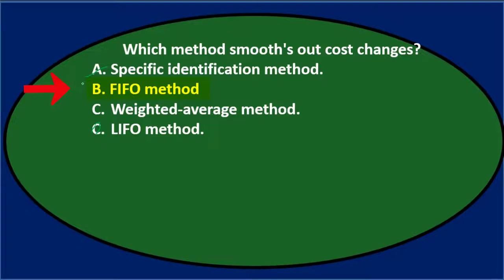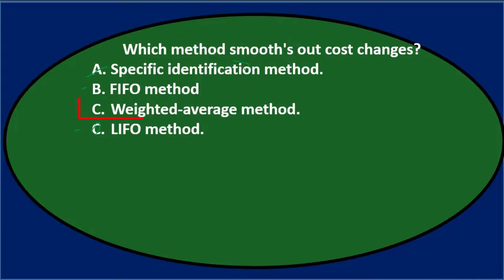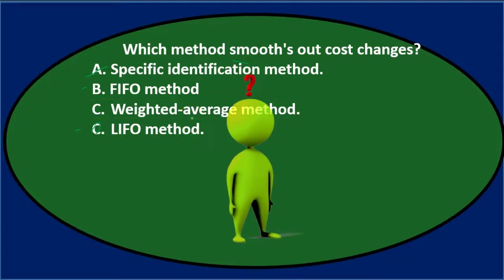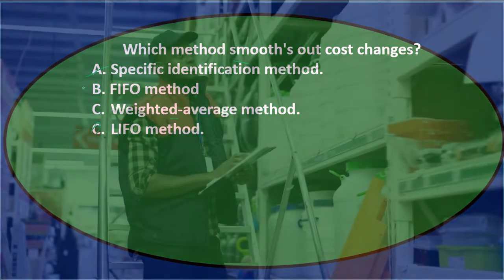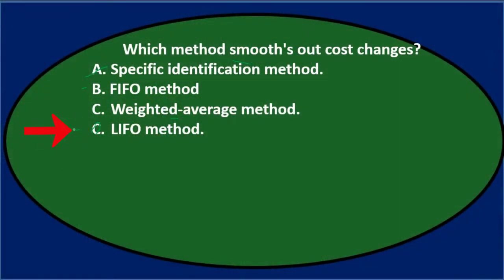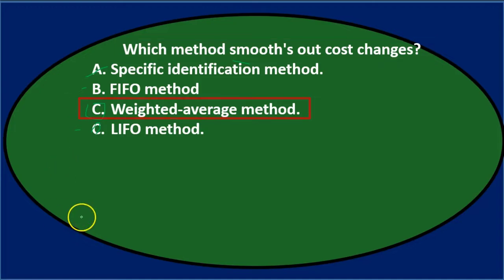B, First In First Out, I'll keep that for now. C, Weighted Average Method. And D, Last In First Out method. Of those three methods, we would think the two extremes are First In First Out and Last In First Out. So if we're talking about something that smooths out costs, that would be some type of average. FIFO and LIFO will have extremes in terms of inventory and cost of goods sold amounts — LIFO in the opposite extreme. Weighted Average will typically be somewhere in the middle. Therefore, our answer is C — which method smooths out cost changes? C, Weighted Average Method.